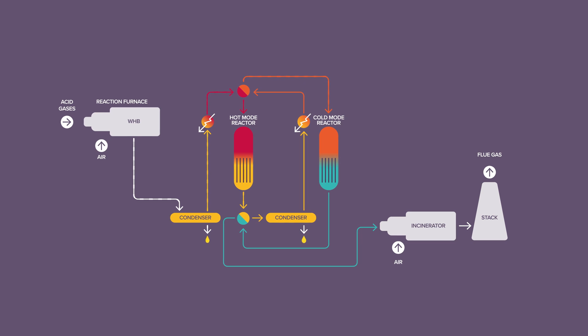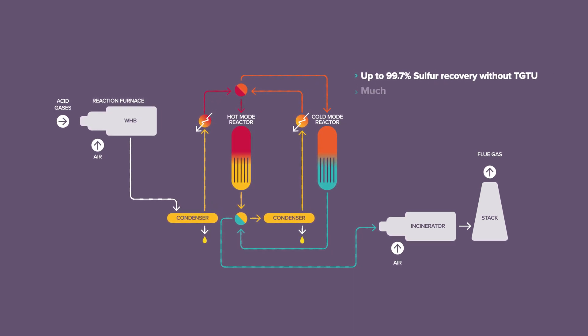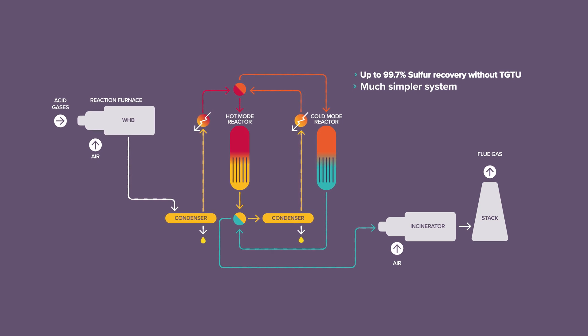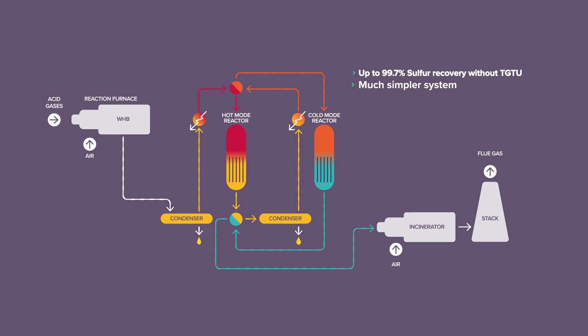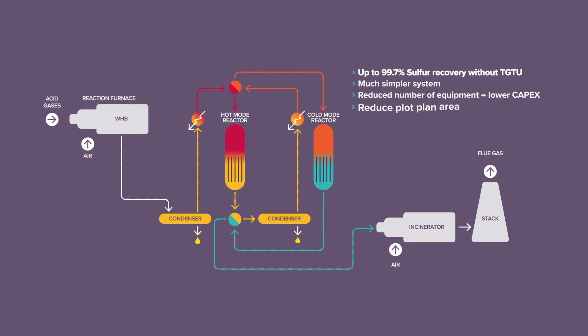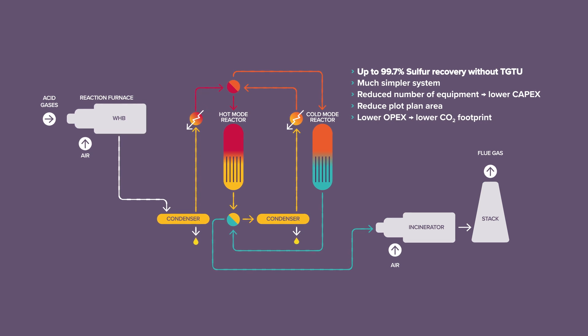SmartSulf is able to achieve high sulfur recovery of up to 99.7% with a simple two-stage catalytic process and without TGTU. SmartSulf is a solution with less equipment, reduced plot plan area, and lower CO2 footprint than a conventional Klaus plus tailgas treatment unit system.